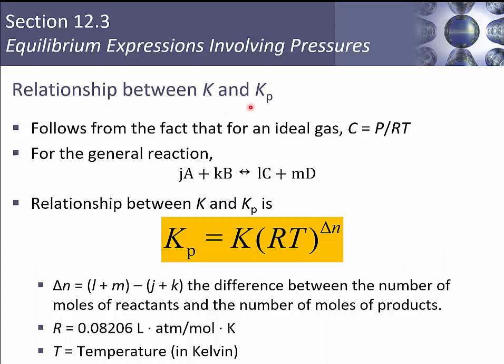There is a relationship between our KC and our KP, and it's going to follow from the fact that for an ideal gas, our concentration is going to be pressure divided by RT. So this RT term is what we've got to worry about.